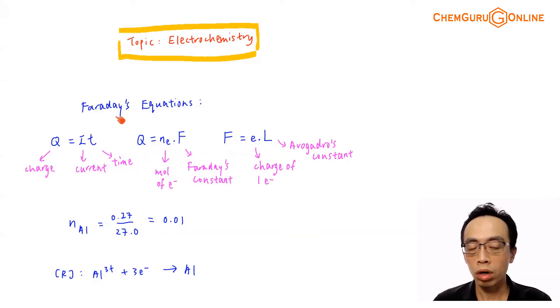We have 3 of them, we call them the Faraday's equations. Equation number 1 is Q equals to IT, your charge equals to current times time. Second equation is Q equals to number of mole of electron times Faraday's constant, your charge equals to mole of electron multiplied by your Faraday's constant. Faraday's constant is actually inside the table of constants in the data booklet. It represents the charge of 1 mole of electron.